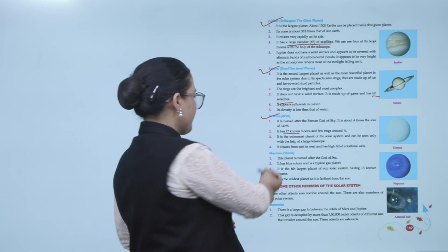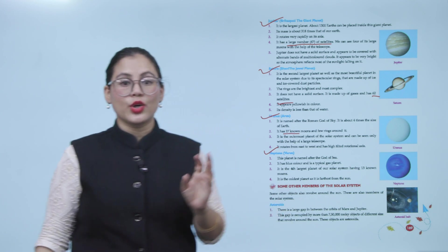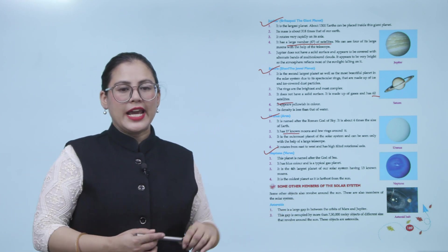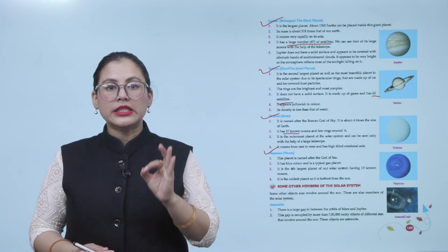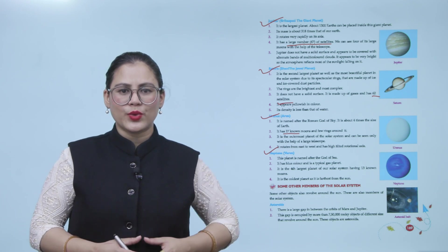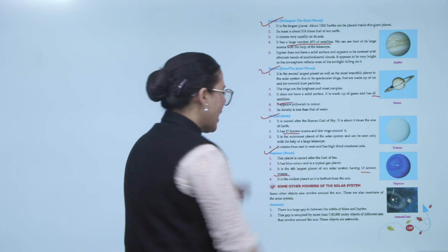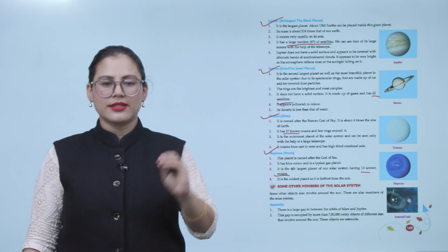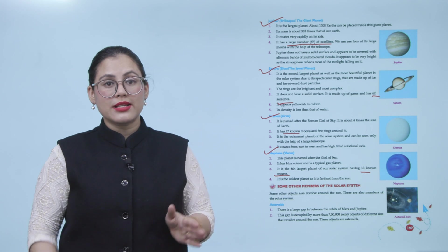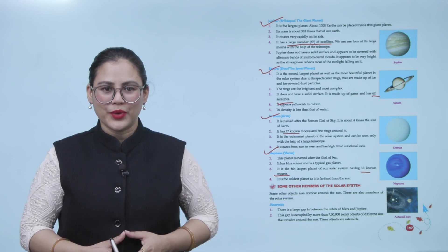Neptune, or Varun. This planet is named after the god of sea. It has blue color and is a typical gas planet. It is the fourth-largest planet of our solar system, having 13 moons. It is the coldest planet as it is farthest from the sun.